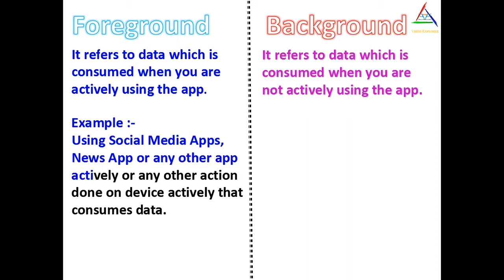Examples of data consumed when you are actively using apps — that means in foreground — are when you are using social media apps, reading news in an app, or watching live scores of a game. These and many other actions you are doing actively on your device are listed under the category of foreground.